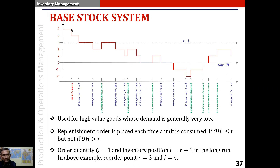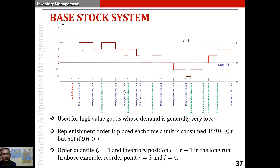Now let's understand how inventory changes. The on-hand inventory here is 5. After some time, there is a consumption, and the on-hand inventory comes down to 4. After one more consumption, the on-hand inventory goes from 4 to 3. A line here indicates that the reorder point has been fixed at 3. Since we have reached the reorder point, we now place a replenishment order of exactly 1 unit with the supplier. This creates a scheduled receipt of 1 unit, so the inventory position is on-hand inventory 3 plus scheduled receipt 1, equal to 4.